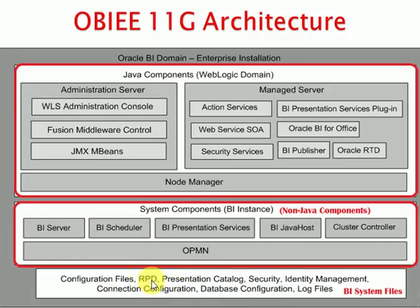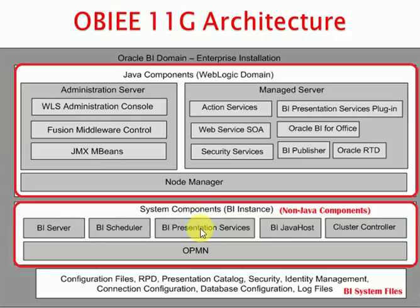Security information is stored in files, along with identity management. The RPD you have created is a major part of your BI Server, where you design the data. Configuration files like NQSConfig and Presentation Services configuration files are all mandatory and stored in your system as BI system files. Log files are also important — if something goes wrong or you want to identify issues, you can go through the logs to understand what happened with BI services, Presentation Services, Scheduler, Java Host, or the Cluster.